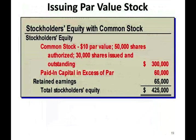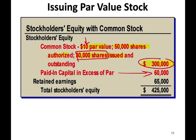On the balance sheet, we show common stock of $300,000 — $10 par value, 50,000 shares authorized, of which 30,000 are issued. Notice 30,000 issued times $10 equals $300,000. Paid-in capital in excess of par is $60,000, and we have retained earnings of $65,000. This is how things are presented on the balance sheet.